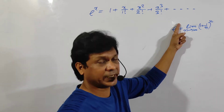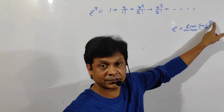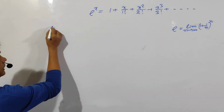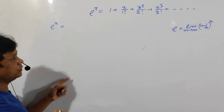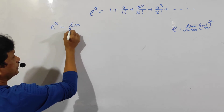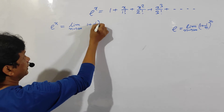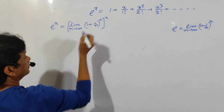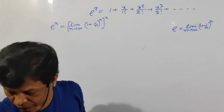And if I take e to the power x, then this power x, so the power will be nx. So let us see here — e to the power x is equal to limit n tends to infinity of 1 plus 1 by n to the power n, whole to the power x. This is e, this is e to the power x.